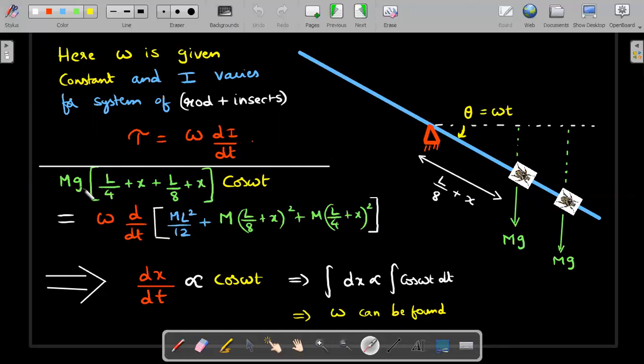The torque on the left-hand side is due to these two weight forces. The rod's weight will pass through the pivot. So I wrote the torque on the LHS: MG into (L by 8 plus X) into cos theta, and cos theta is cos Omega t because you need to take the perpendicular distance. On the right-hand side, Omega comes out and d by dt of the moment of inertia of the system. After differentiation, the entire X term gets cancelled and only dx by dt survives.